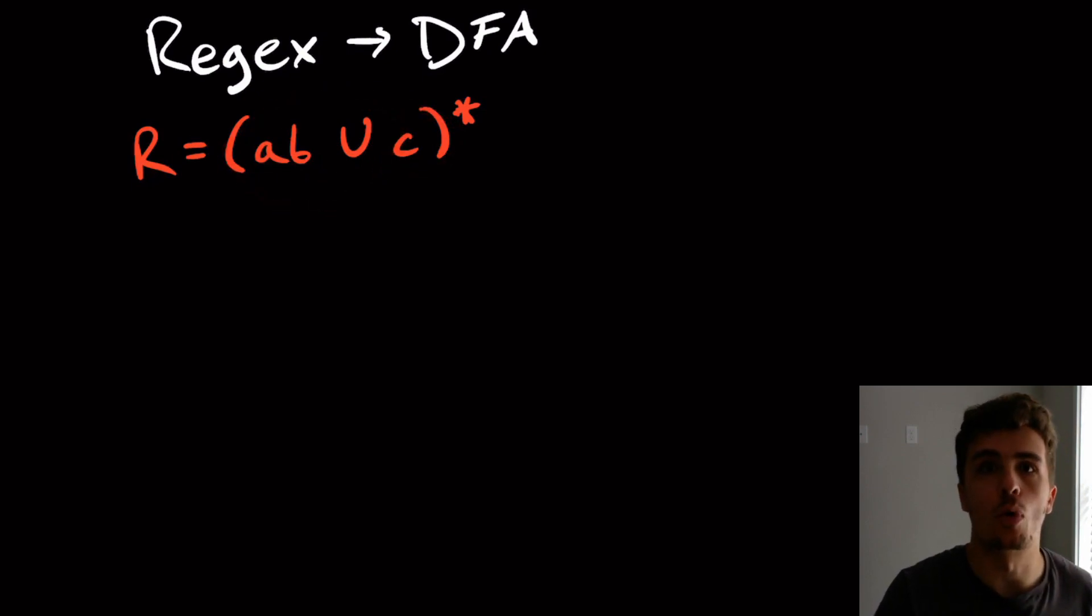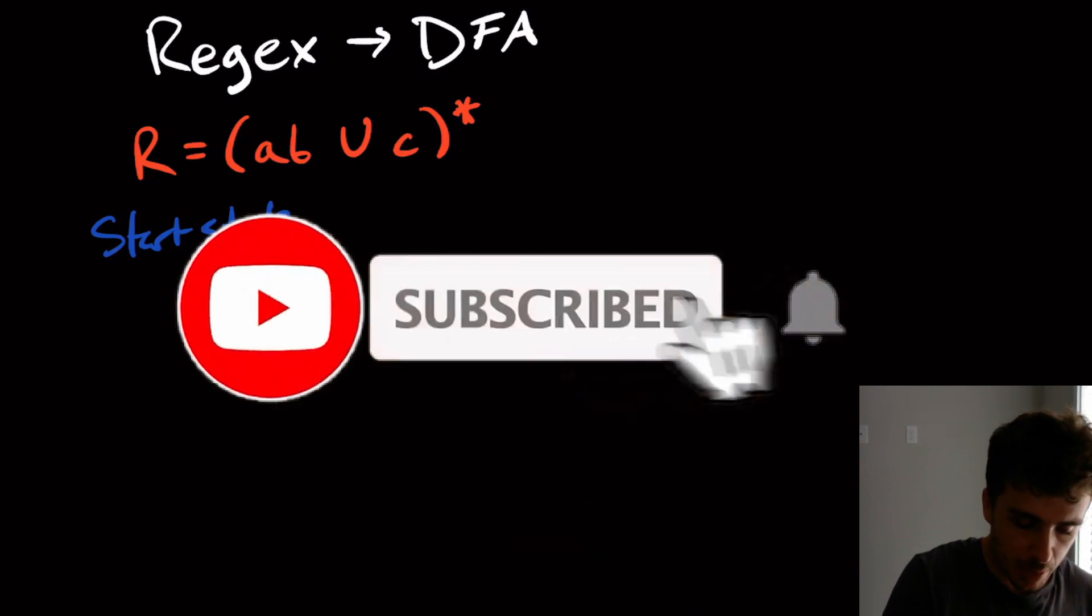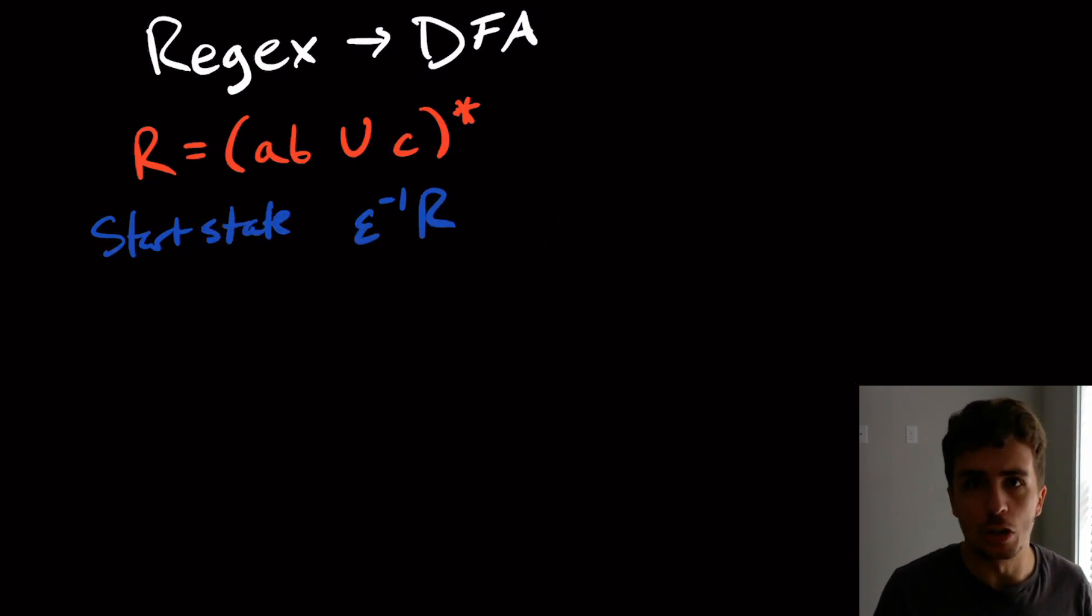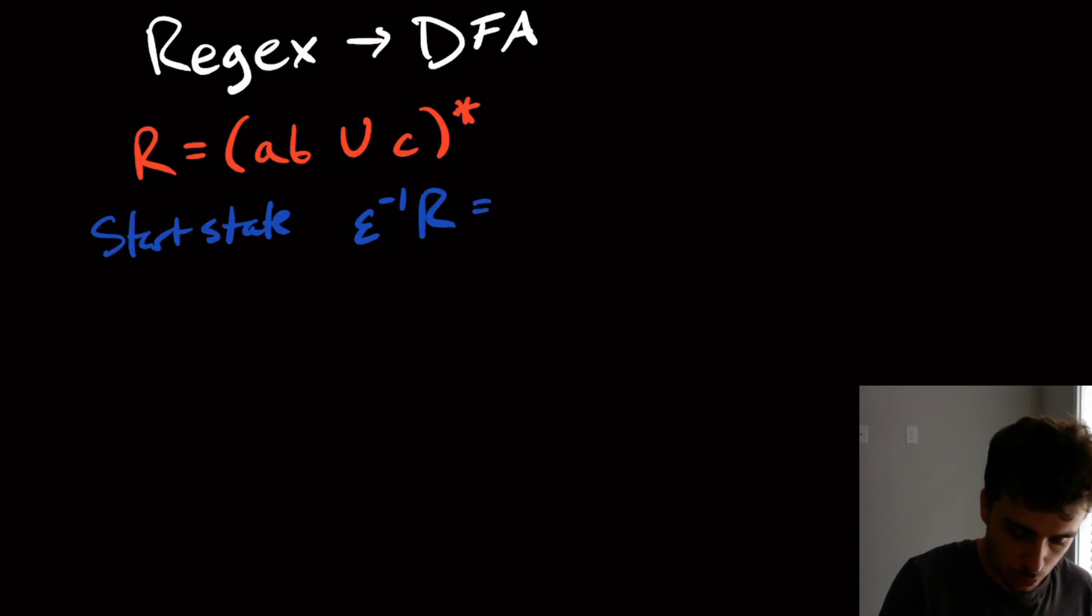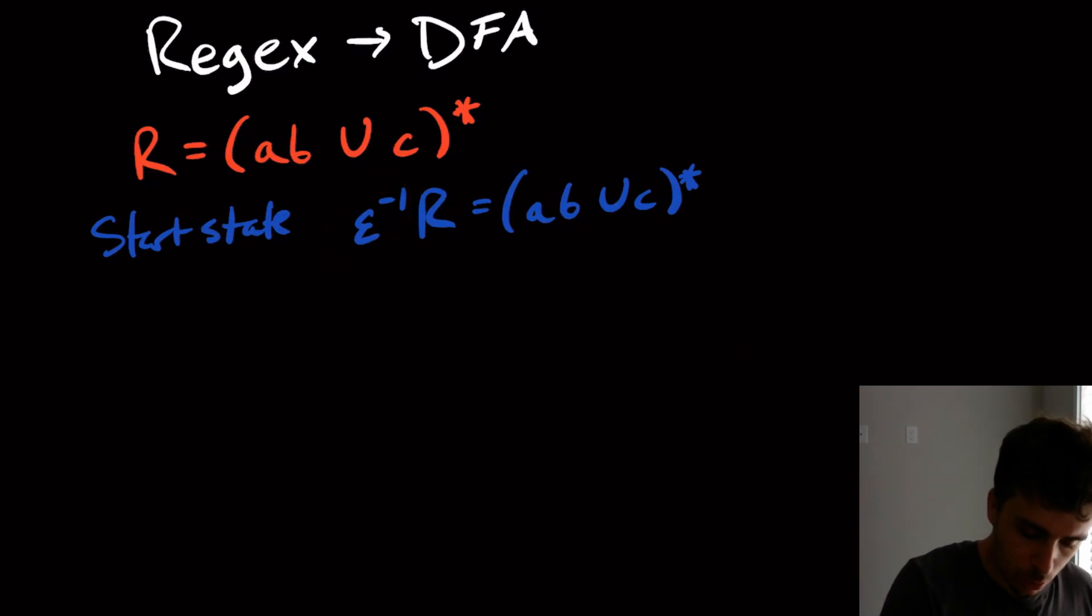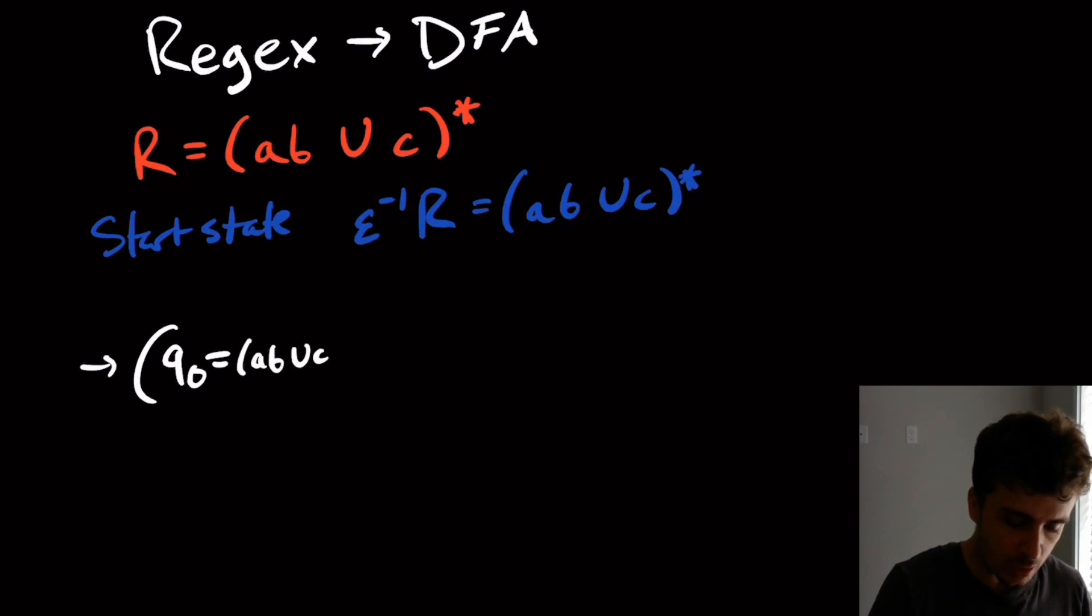Let's actually make the DFA for this regex right here. What we need to do first is compute the start state, which here is going to be epsilon taking the derivative with respect to epsilon of r. Well, that doesn't actually do anything to the regex. So that is just AB union C star, and that'll always be true. No matter what regex you do, if you try to take epsilon away from the beginning of every string, it doesn't change anything.